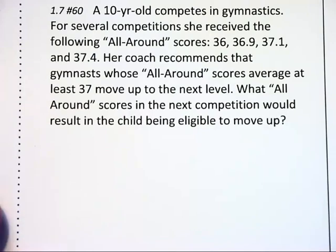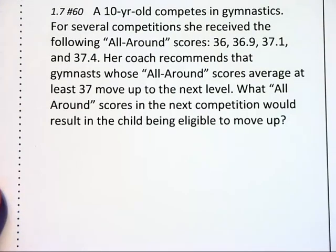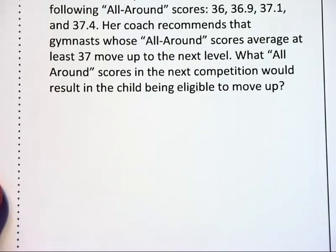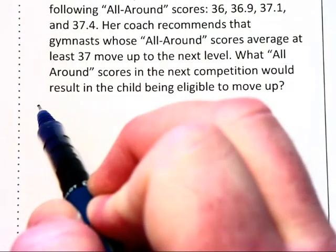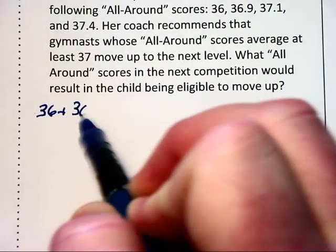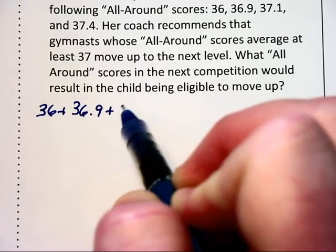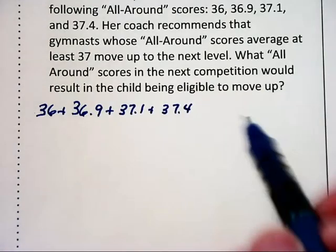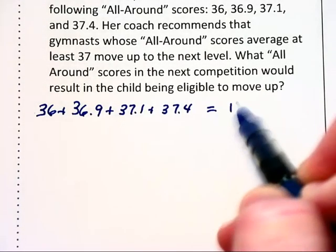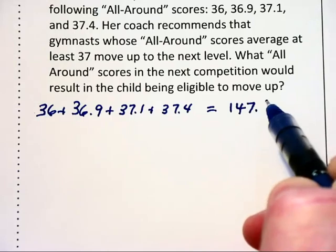In this next problem, we're dealing with a gymnast who needs to get an overall score of at least 37. And the question is, what should she get on the next competition to ensure that she gets these 37 points on the average? So we are going to look at what she currently has. 36 plus 36.9 plus 37.1 plus 37.4. She currently has 147.4 points.